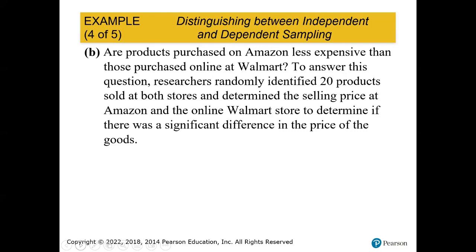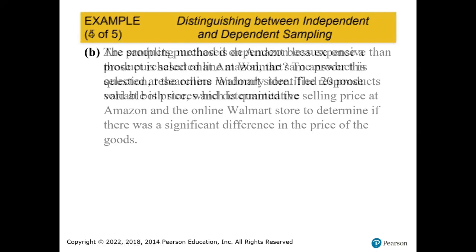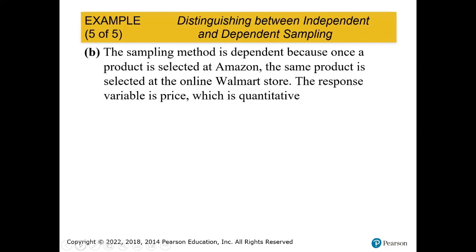Are products purchased on Amazon less expensive than those purchased online at Walmart? Researchers randomly identified 20 products sold at both stores and determined the selling price at Amazon and the online Walmart store. Here we have 20 products at both locations, so the price at Amazon is compared directly to the price at Walmart. These are considered dependent samples because one is dependent on the other, and the response variable is price, which is quantitative.